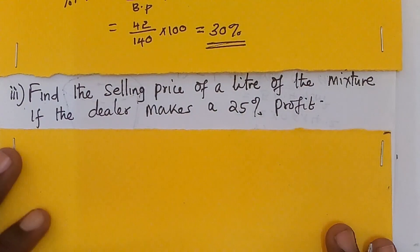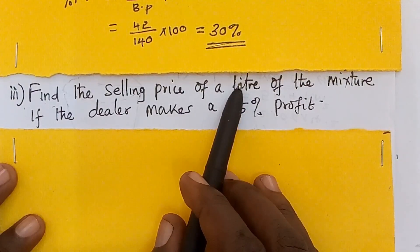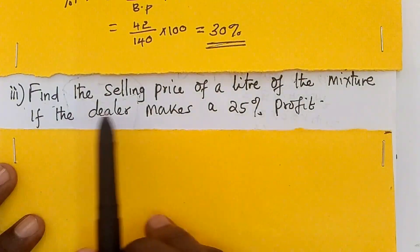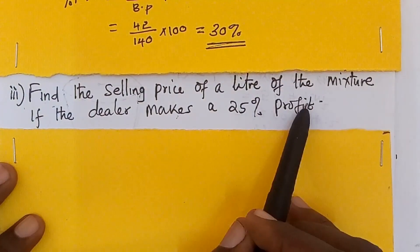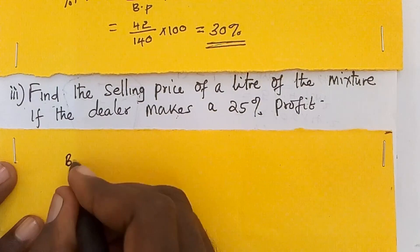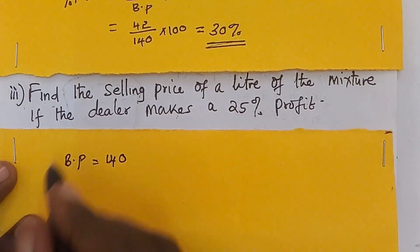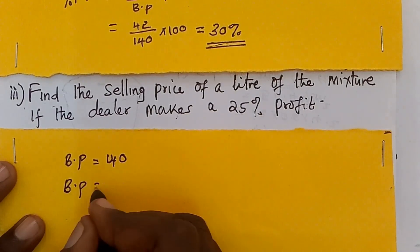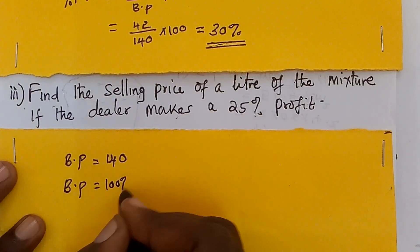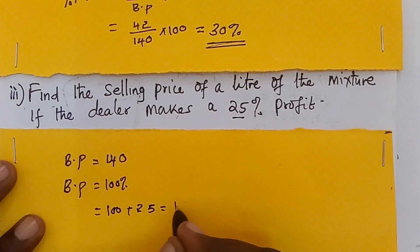Let us go now to number 3, which says find the selling price of a liter of the mixture if the dealer makes 25% profit. Bear in mind that we get the cost price or the buying price as 140. And buying price is always 100%. And here we were given 25% profit. Then we say 100 plus 25 is equal to 125%.